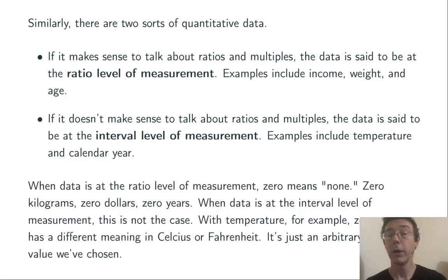A quick and dirty way of determining whether data is at the ratio level of measurement or the interval level is to ask whether zero on that scale actually corresponds to nothing or none. For example, zero kilograms, zero dollars, or zero years old. In each case, zero means that you don't have any kilograms, dollars, or years.